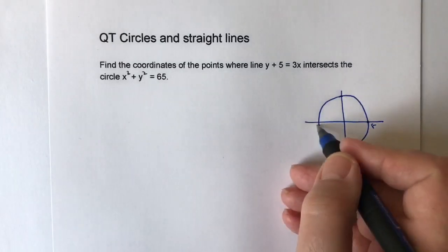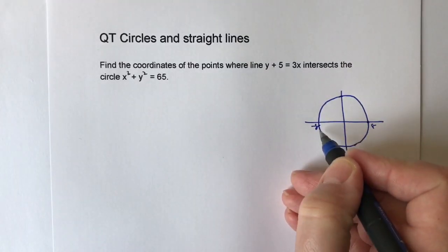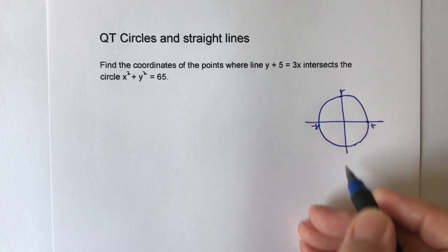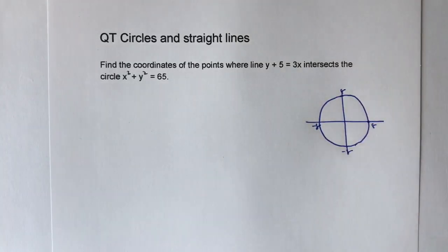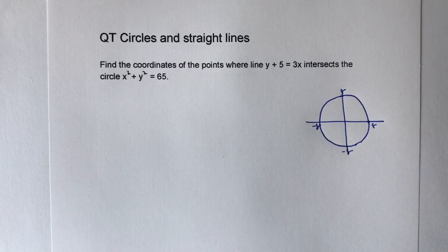So it would be 8 on the x-axis, minus 8 over here, and then 8 on the y-axis and minus 8 there. So what they're asking us to do is to calculate where a straight line that passes through that circle will intersect.